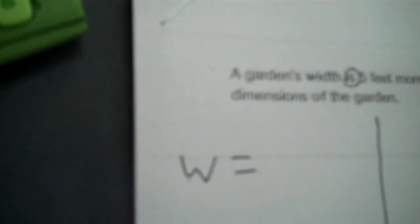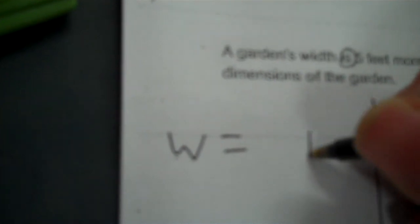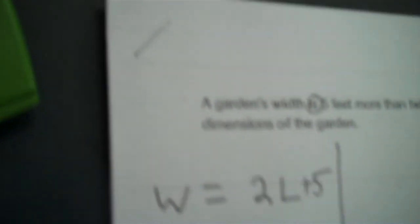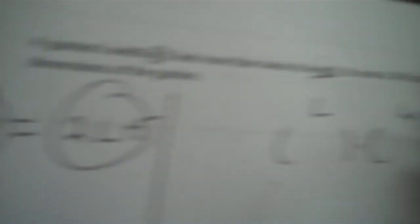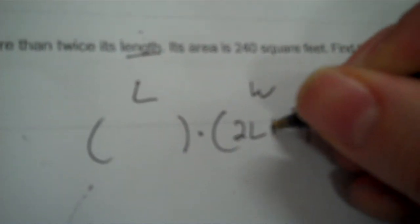I see the word 'width,' and I've spaced the other variable L over here. Find the word 'length' and look your way backwards — twice. So L has to be multiplied by 2. And then '5 feet more' means plus 5. So in the W parentheses, you're going to put what W equals, which is 2L plus 5. I need to write it in terms of the same variable. The area we know is 240.